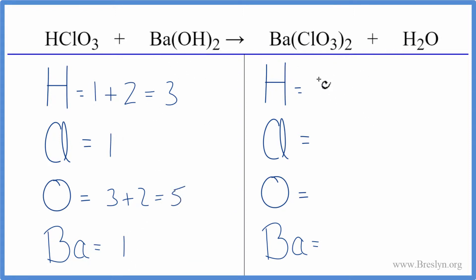On the product side, we have the two hydrogens, two times the one, so two chlorines. Oxygens, two times three, that's six, plus the one with the oxygen. Don't forget that gives us seven and one barium.